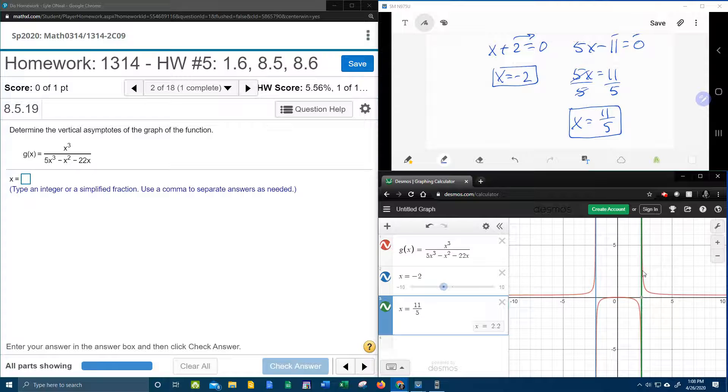What about the other one? x equals 11 fifths. And do you see that also fits nicely right in the red graph? The graph is approaching, but never touching. And so those are our 2 vertical asymptotes.